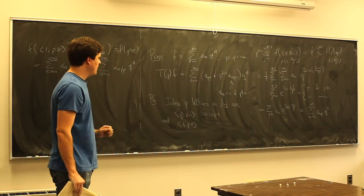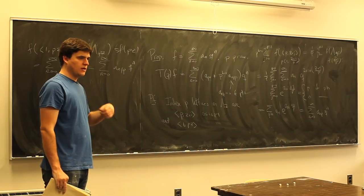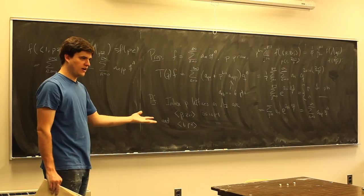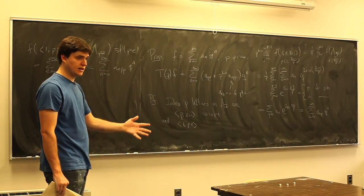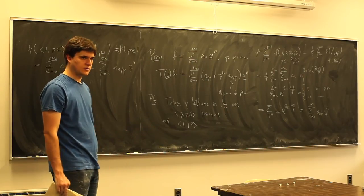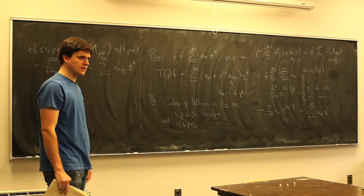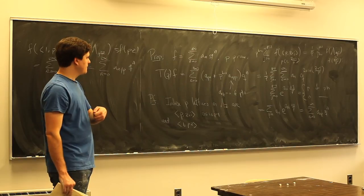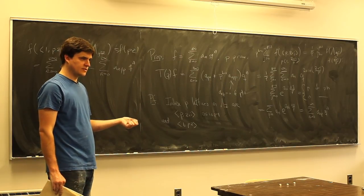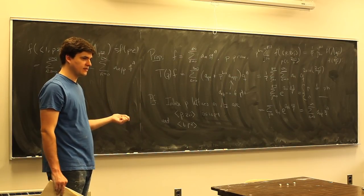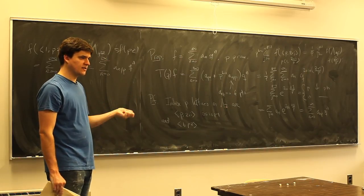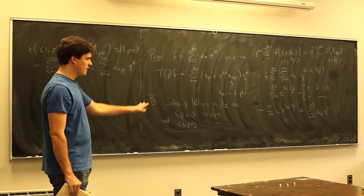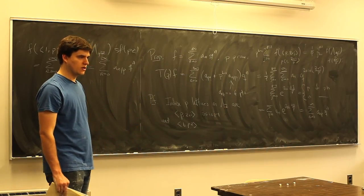The point is that we get these Hecke operators acting on modular forms, all commuting with each other, giving a huge commuting algebra acting on a finite-dimensional space of modular forms. It turns out the algebra is not that big — it's rather small — but this lets us decompose the space of modular forms nicely. In fact, you get a basis of the space of cusp forms consisting of simultaneous eigenvectors for all the T(p). This breaks up the space of modular forms very nicely, and we're going to use that a lot later.